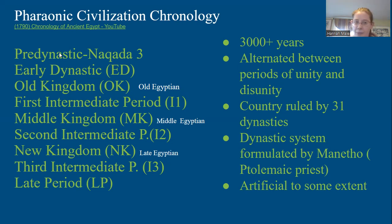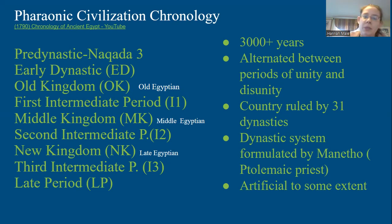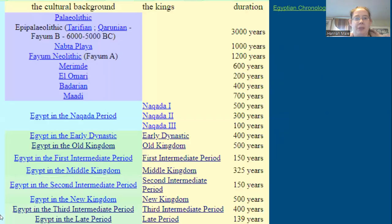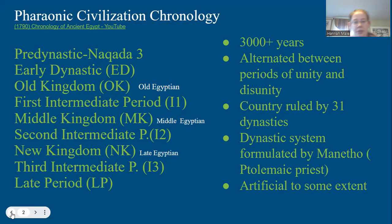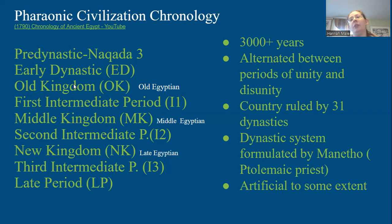First you have the pre-dynastic through the Naqada III period, which ends roughly at the end of that — basically when you see the process of state formation, and a little bit further back, the Neolithic as well. Then you have the early dynastic, which is basically the first couple hundred years or so of the state. Then you have the Old Kingdom, where it seems the royal family held the most absolute power, at least according to the archaeology. Then you have the first period of decentralization, which is the First Intermediate.